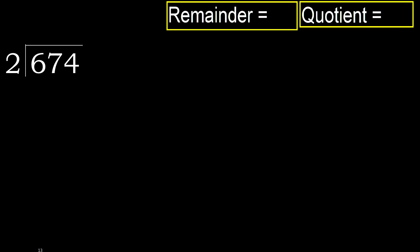674 divided by 2. 6 is not less, therefore with 6, 2 — multiply by which number is nearest, 2, 6, but not greater.